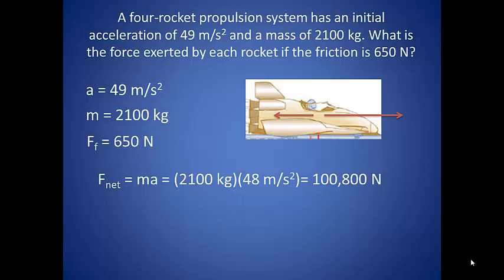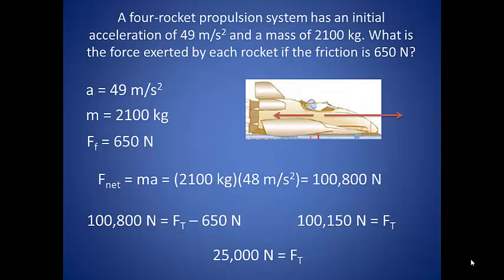If we look at our force equation, hopefully it stands out that the force part is the net force. We have to take into account that there are two horizontal forces acting in opposite directions, so we need to subtract our friction force from our total force to find the thrust force of the engines. This gives us a total force from the engines of 100,150 Newtons. Now the question actually wants to know what is the force of each engine, so since there are four of them, we need to divide that total thrust by four. So each engine on our rocket applies a force of 25,000 Newtons.